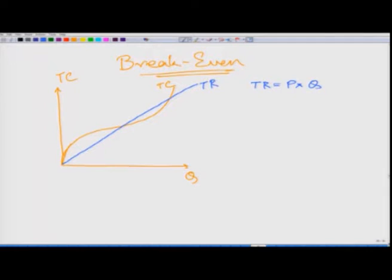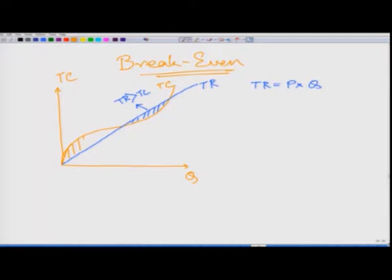When the total revenue curve is above the total cost curve, we have a positive profit, because total revenue is greater than total cost. On the other hand, when total cost is more than total revenue, we have a negative profit — meaning we are incurring a loss.